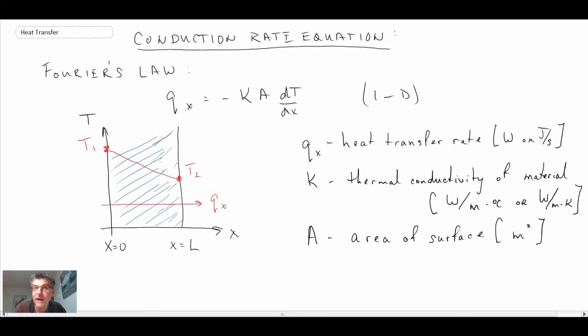Finally, we have dT/dx. That is the temperature gradient in the direction of heat transfer, and that's what drives the heat transfer to take place. The units are degrees Celsius per meter or Kelvin per meter. Given we're looking at a difference, it doesn't matter if it's degrees C or Kelvin.